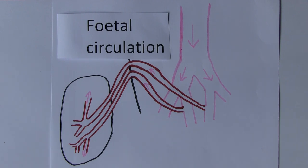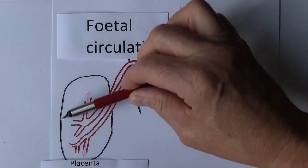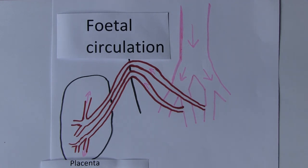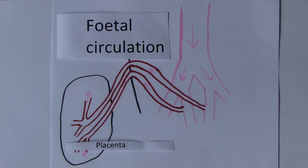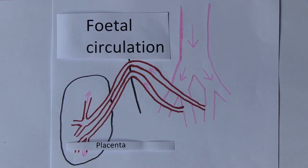There is a placenta - this structure here is the placenta - and it brings oxygen and nutrients from the mother while taking away waste products and carbon dioxide from the fetus into the mother's circulation. So the placenta serves as the organ for fetal nutrition, excretion, oxygenation, and removal of carbon dioxide. It's a temporary organ, but it's an exchange organ.